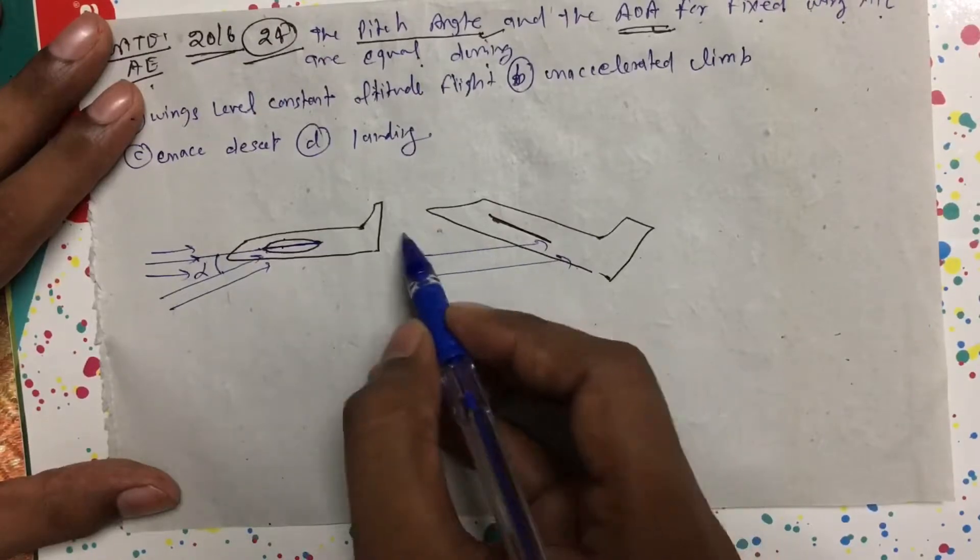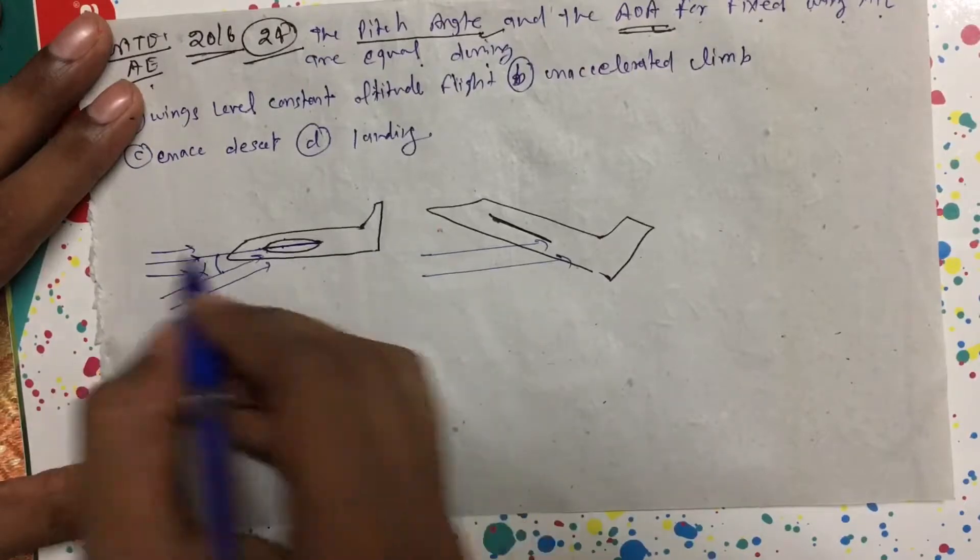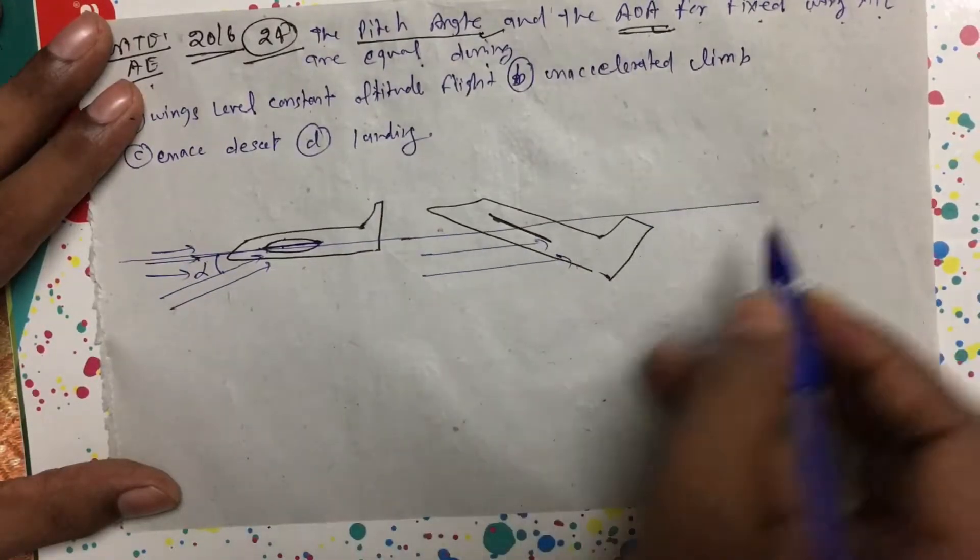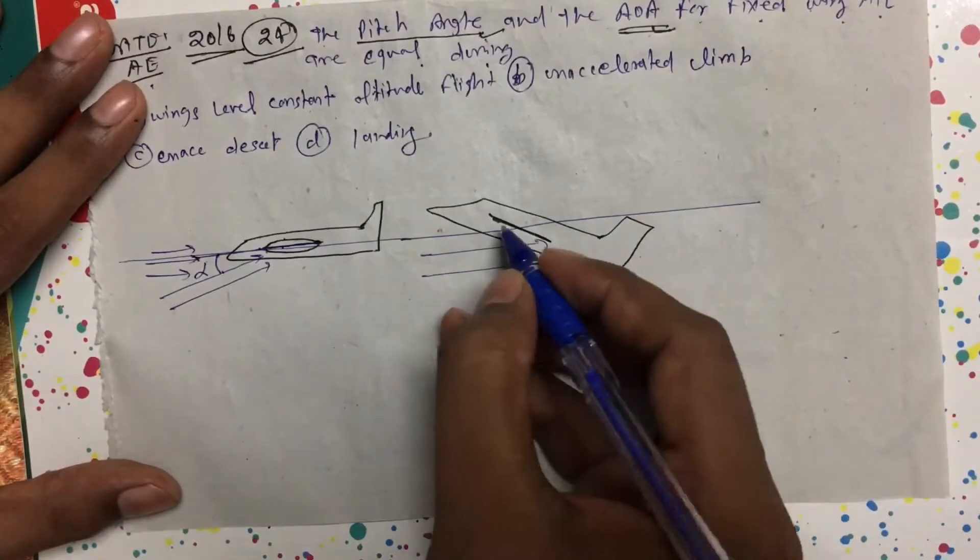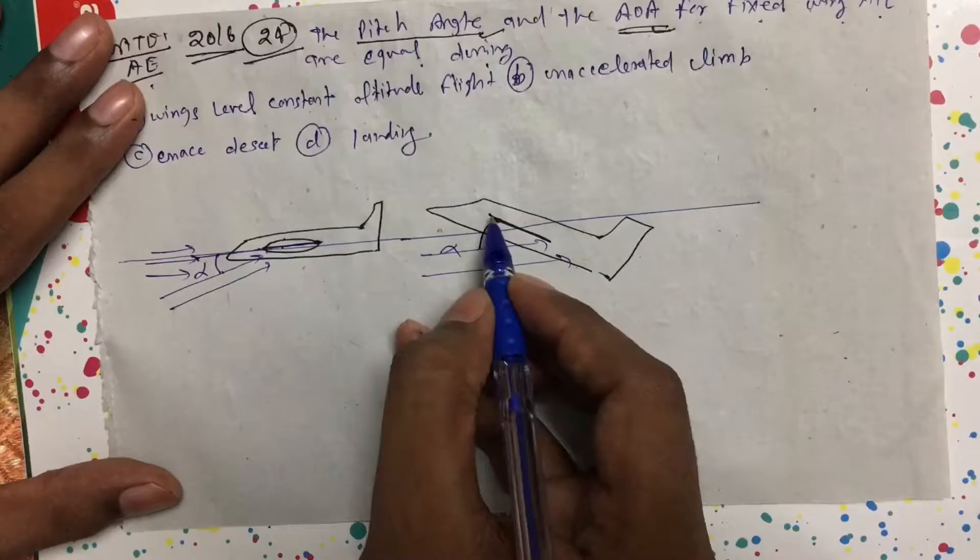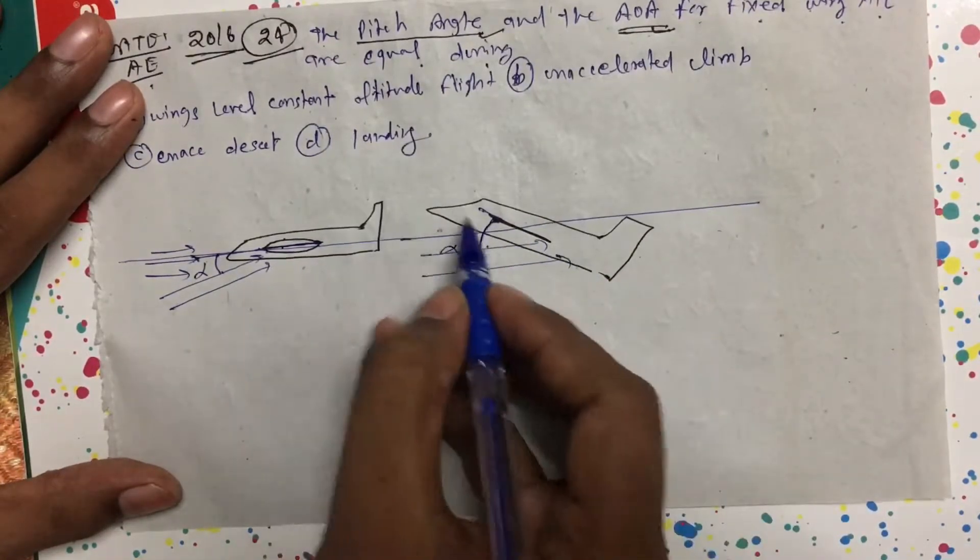And this is the horizontal, I mean the origin. Like in this case, this is the origin, and same origin I am trying to draw - this is the origin. So this much angle is again alpha, the angle with the chord line and the free stream is alpha. But the angle of the fuselage axis with the origin, that is called pitch.